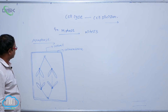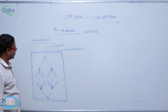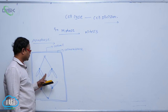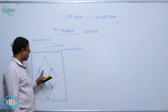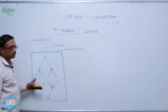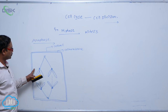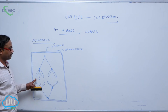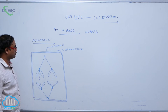In the anaphase process, each chromosome splits at the centromere. After that division of the centromere, each chromatid acts as a chromosome of the future daughter nuclei. Chromosomes are then moved towards the opposite poles.